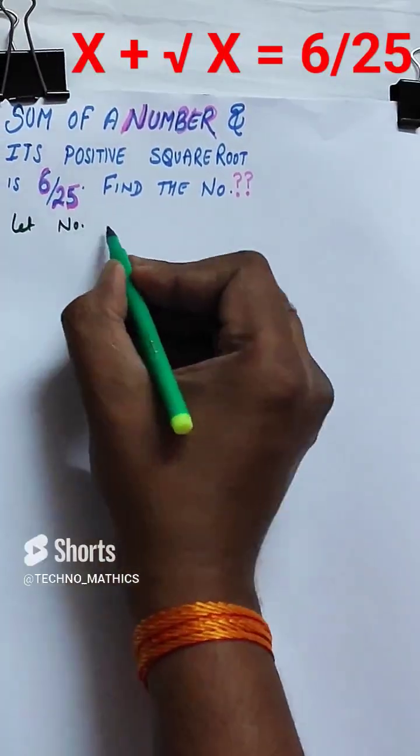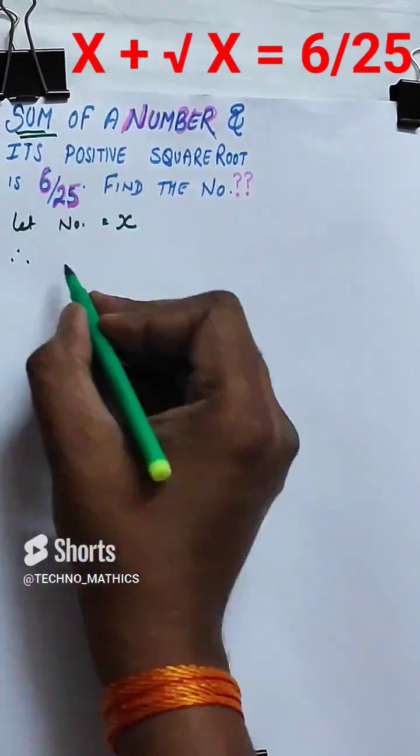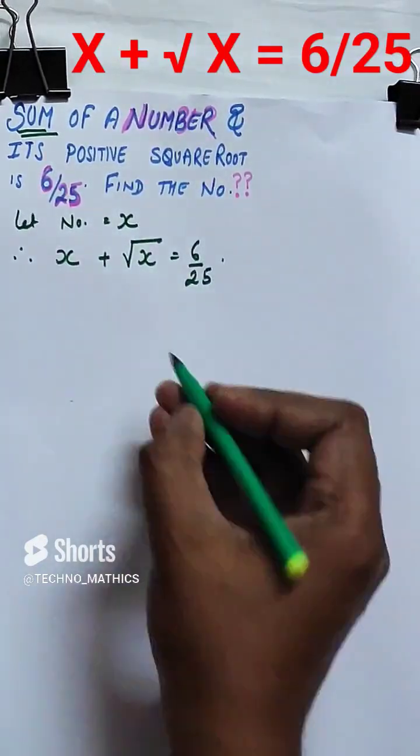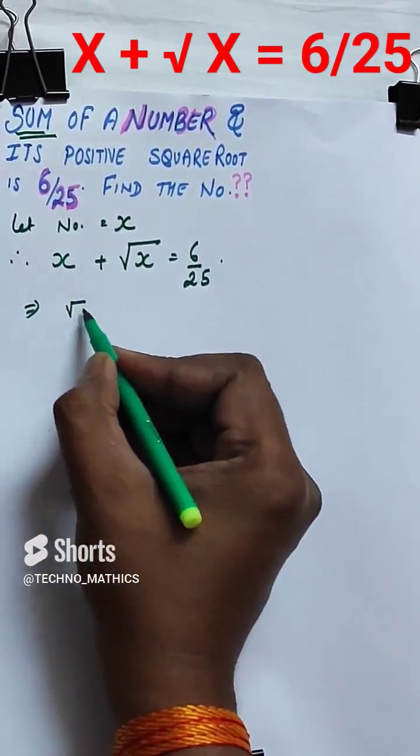This is a question of quadratic equation, where a number and its positive square root sum is 6 by 25. Let us assume the number as the variable x.